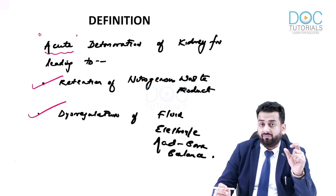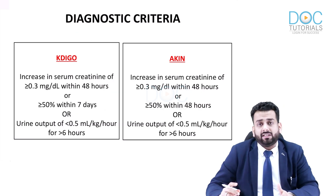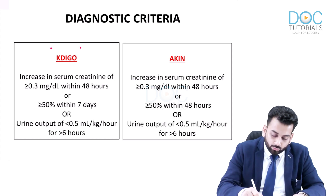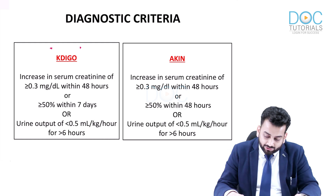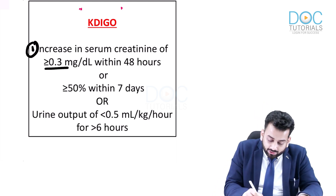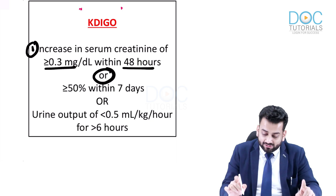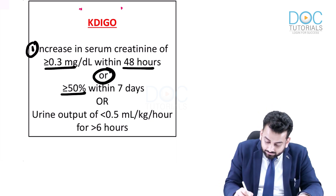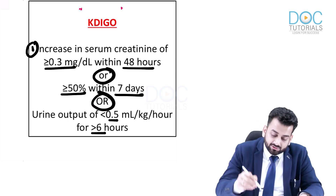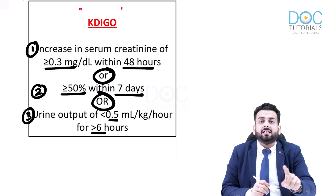We will study the KDIGO diagnostic criteria, which is the most widely accepted definition of AKI. The diagnostic criteria given by Kidney Disease Improving Global Outcomes — KDIGO — are: increase in serum creatinine by more than or equal to 0.3 mg/dL within two days; or increase in serum creatinine more than or equal to 50% from baseline within seven days; or urine output less than 0.5 ml/kg/hour for more than six hours. Any one of these three criteria, if satisfied, is diagnostic of AKI.